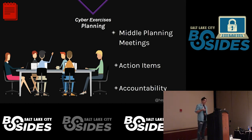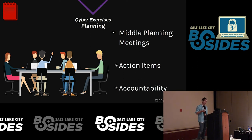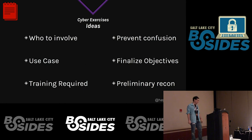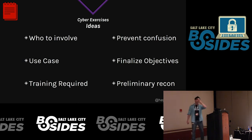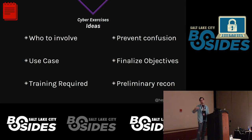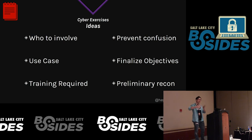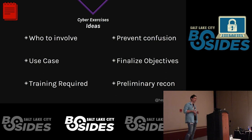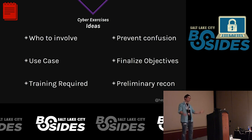The middle planning meetings involve action items, accountability, putting teams together, checklists, making things come to life, and deciding what's realistic. Scope your work properly — how many times have you scoped a pen test and had one day to do five days' work? Ideas for the middle meetings include who to involve, different use cases for your technology, whether your red or blue team needs training, and preliminary recon the red team needs to do. It's important to have the main leaders in each meeting to prevent confusion.